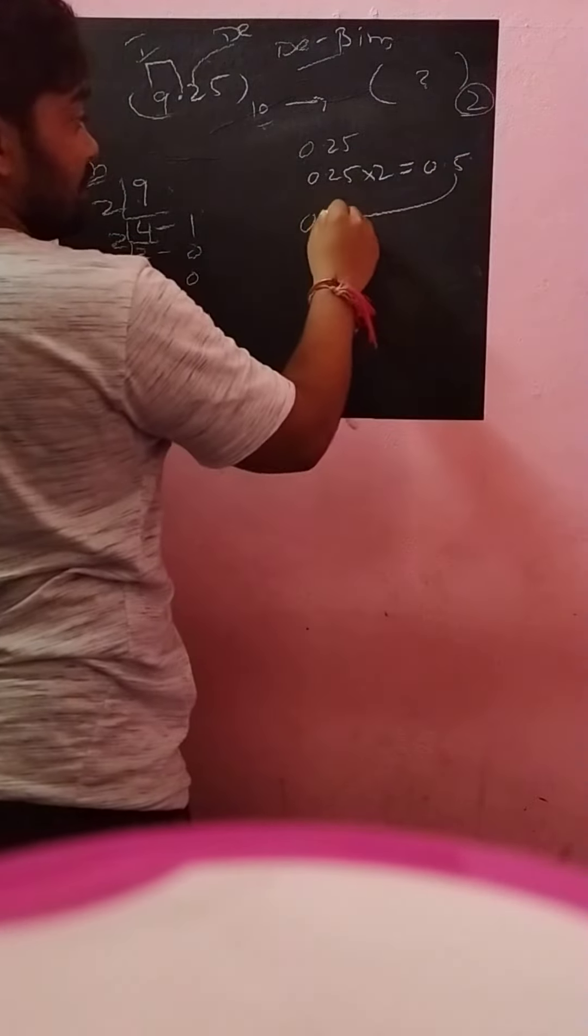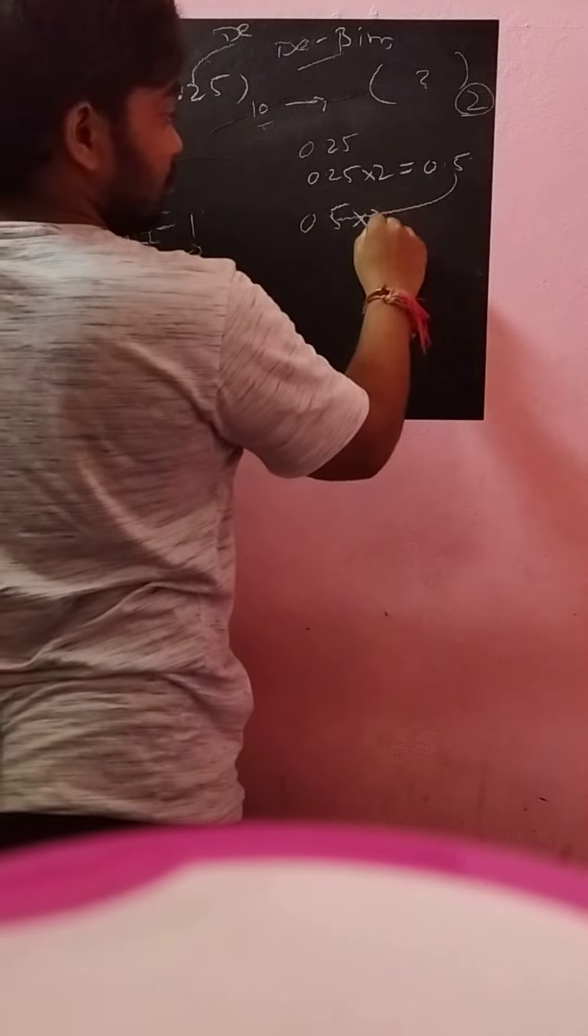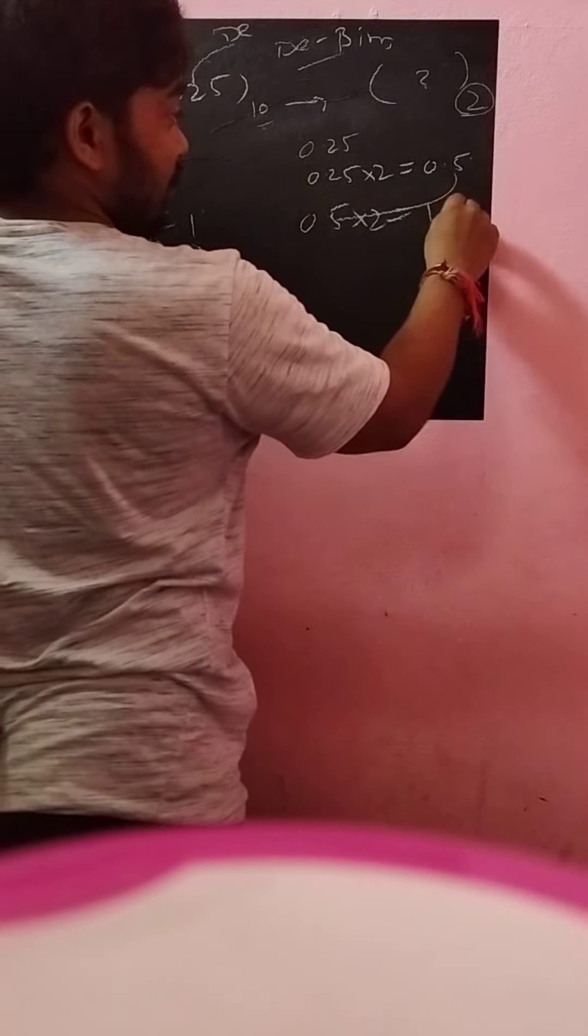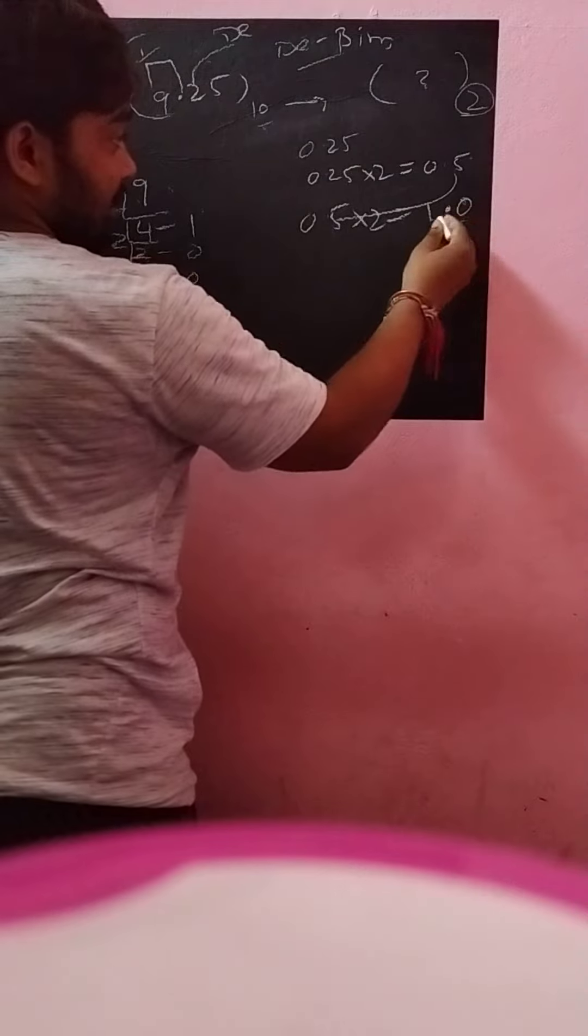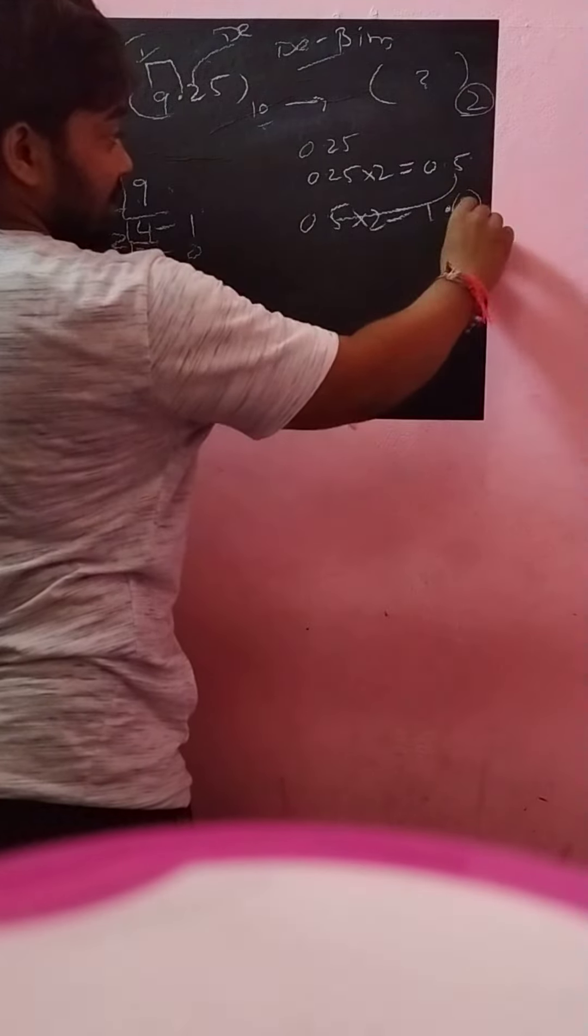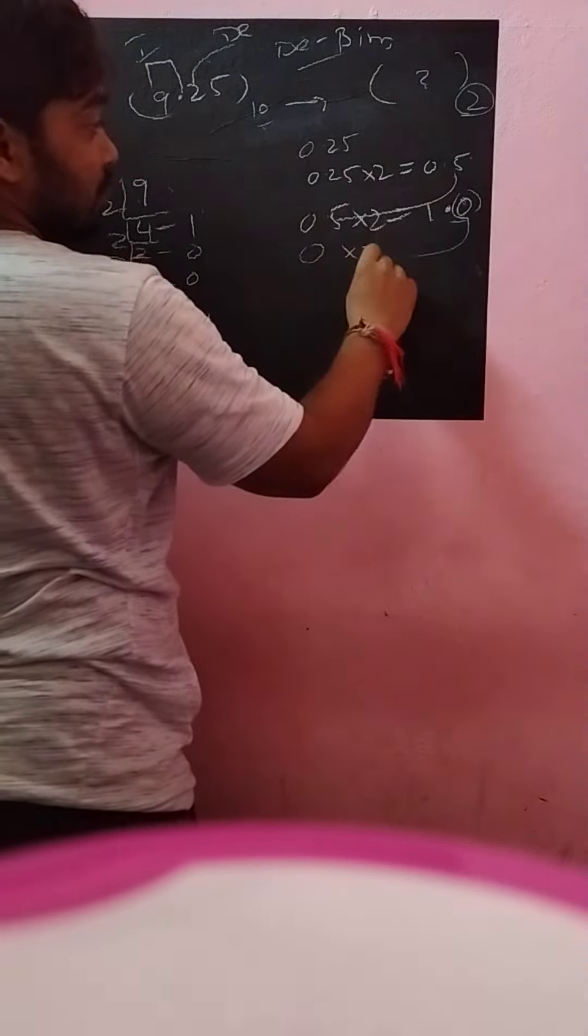Take this 0.5 and multiply by 2. That is 1.00. Again, consider this decimal part, the decimal point. 0.00 into 2.